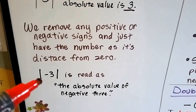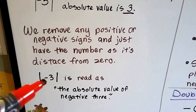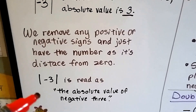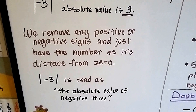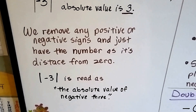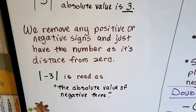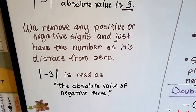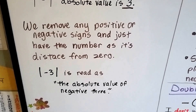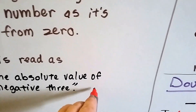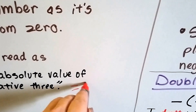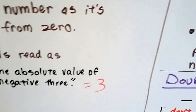So if there's a negative 3 inside of these two vertical lines, it's read as 'the absolute value of negative 3,' and then we would have an equal sign, and then we would write the 3.